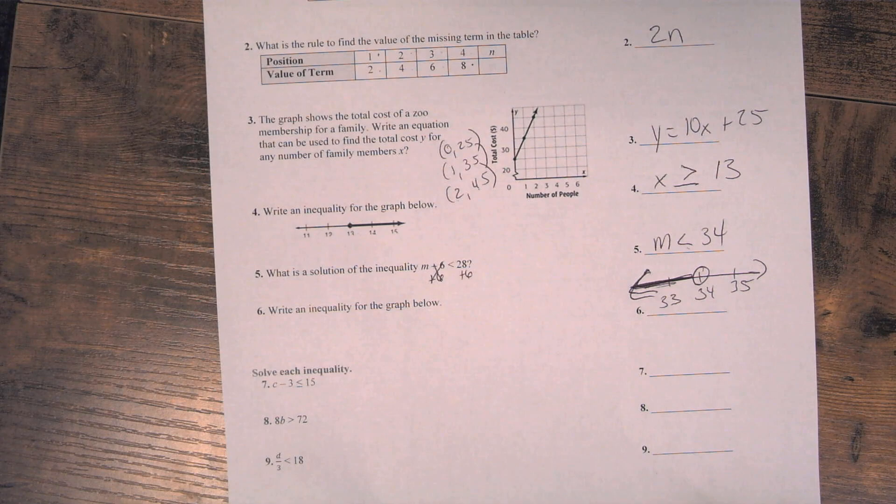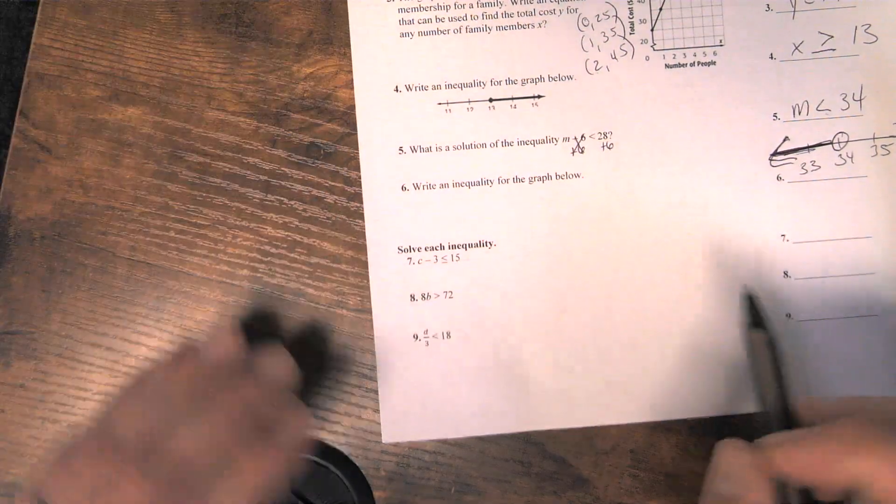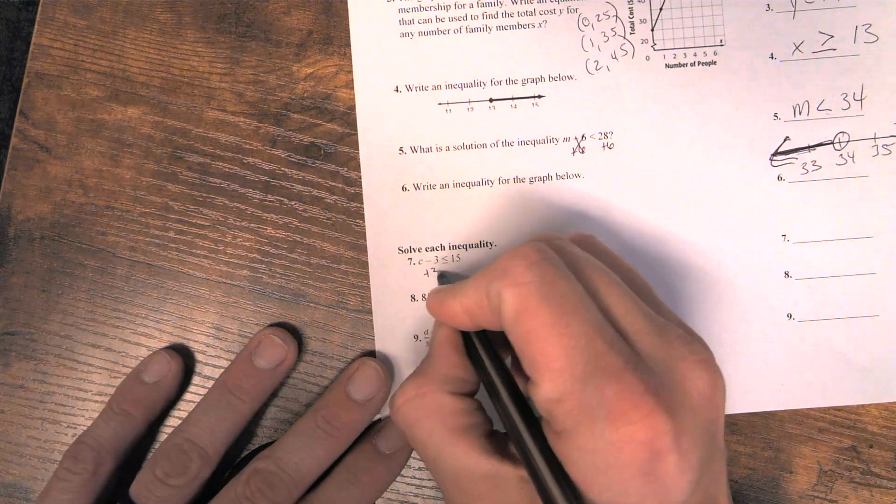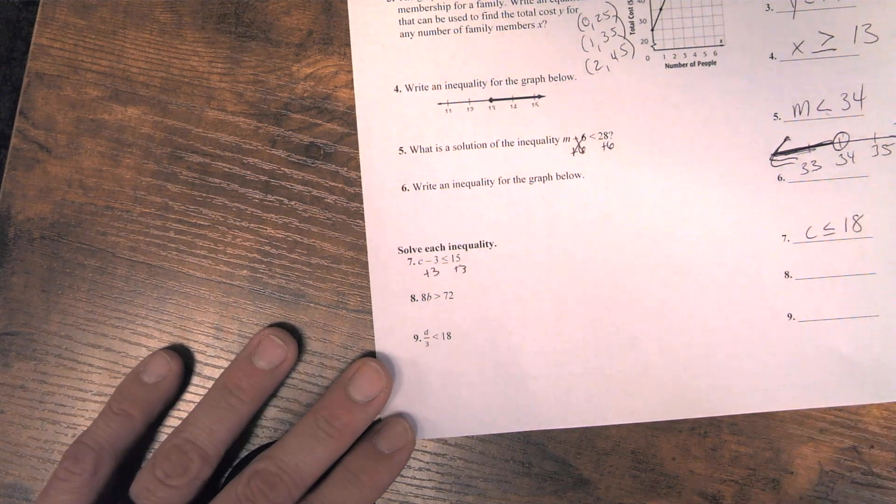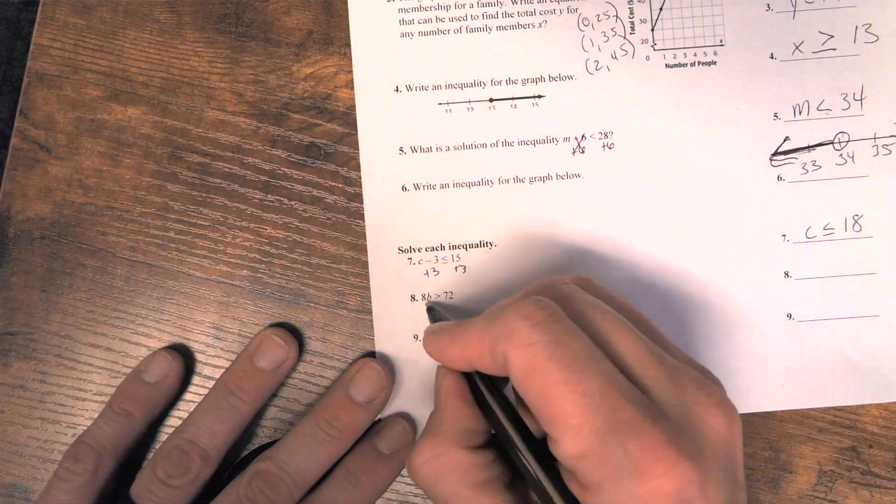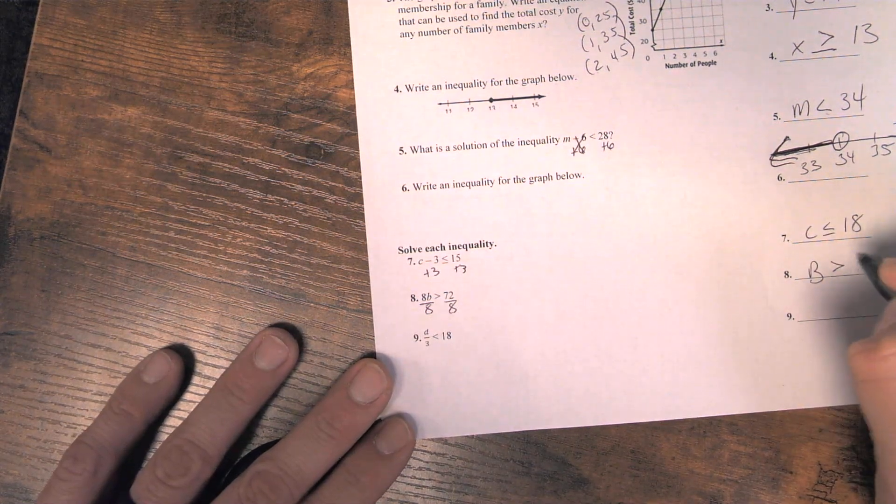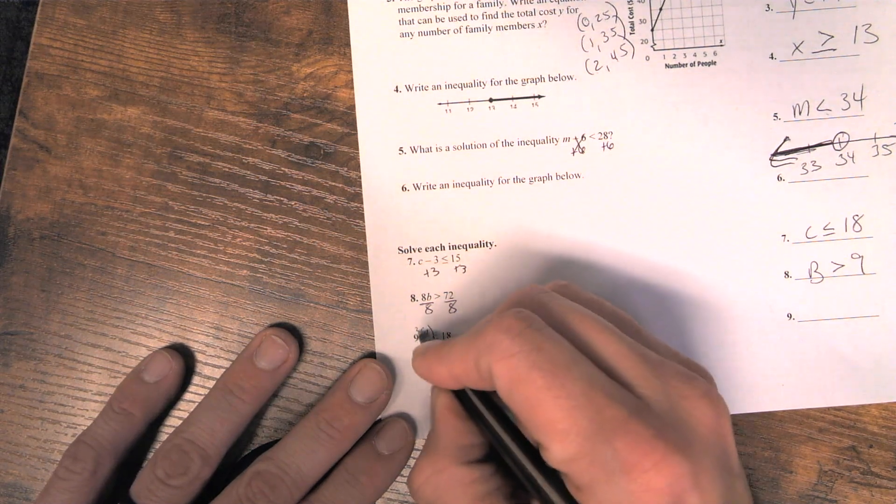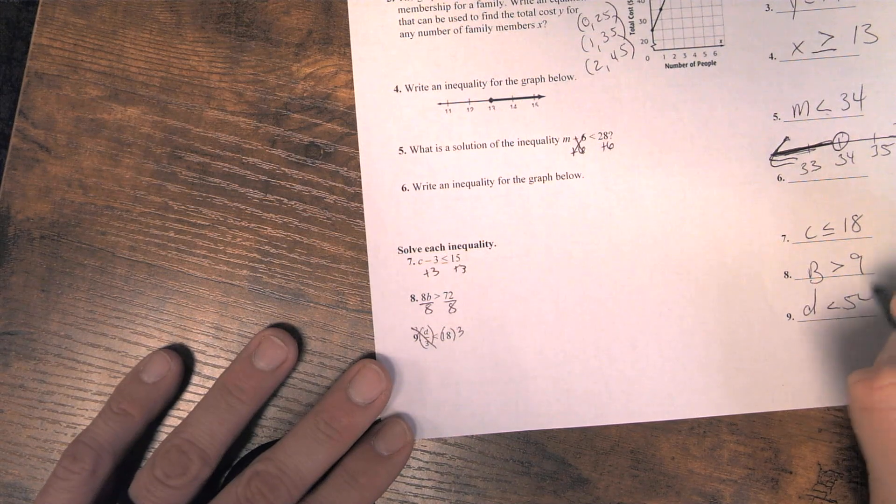7, 8, and 9. So we're solving an inequality, just like an equation, but it's an inequality, so there's no equal sign. So we've got to add 3 to each side. C is less than or equal to 18. Since this is multiplication, we divide. So it's going to be B is greater than 9. And then this is division, so we're going to multiply. So we get D is less than 54. So that's the first page.